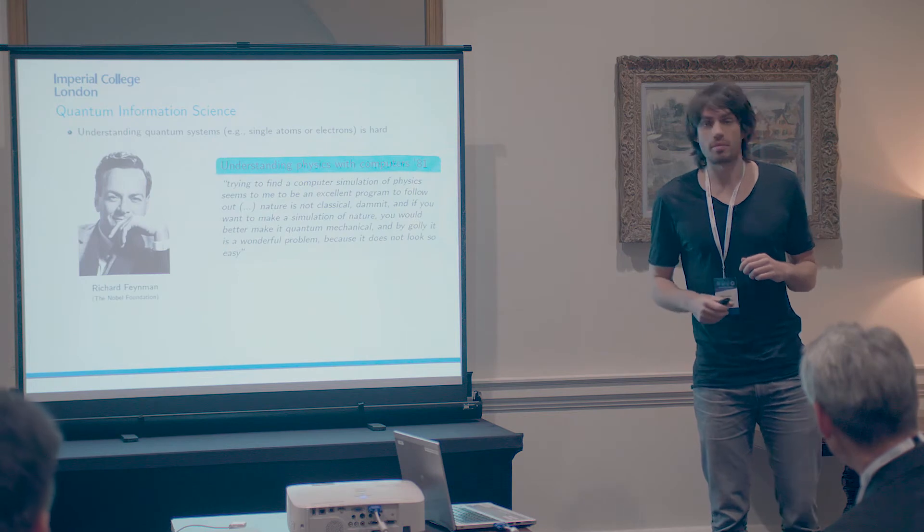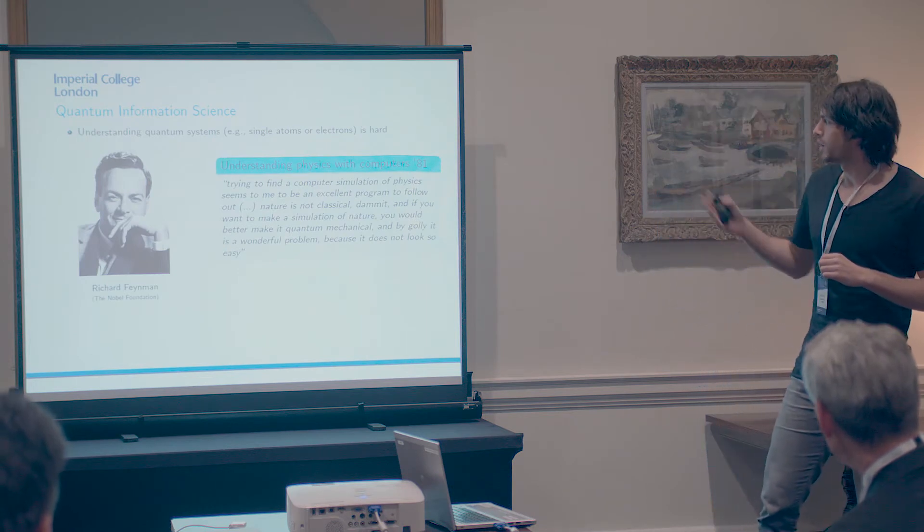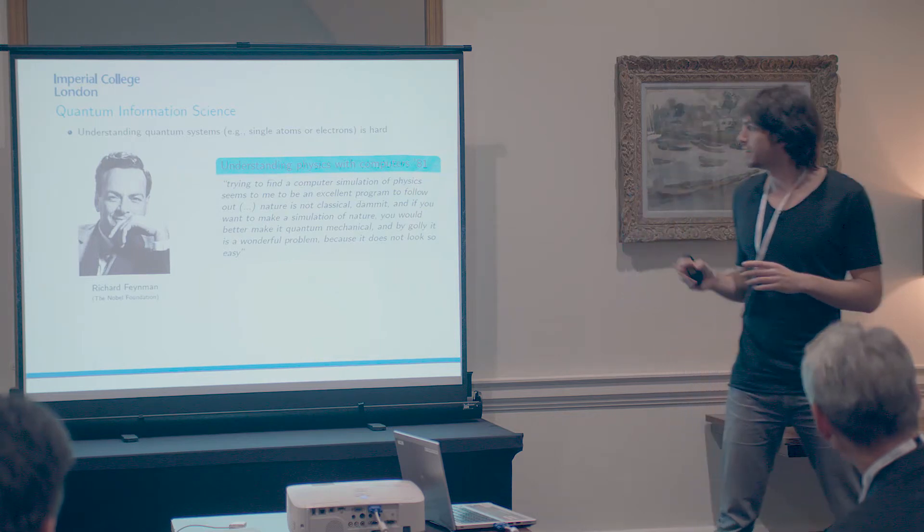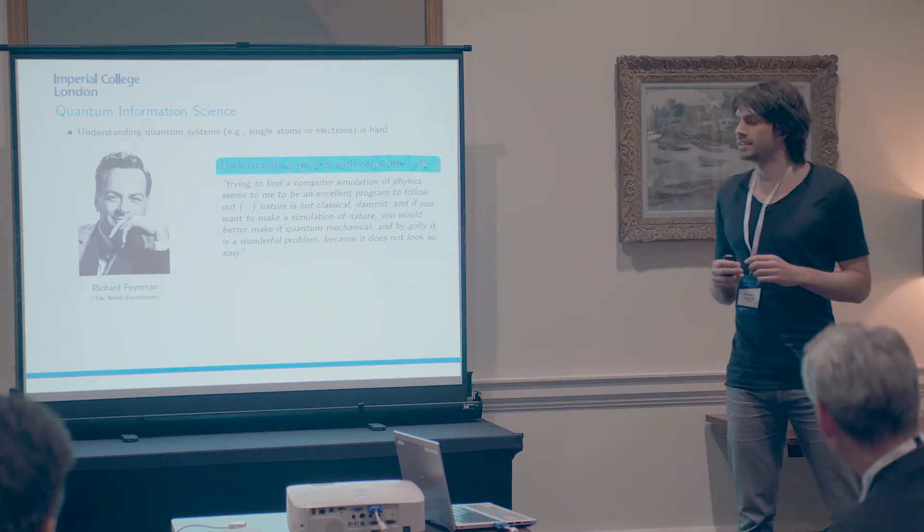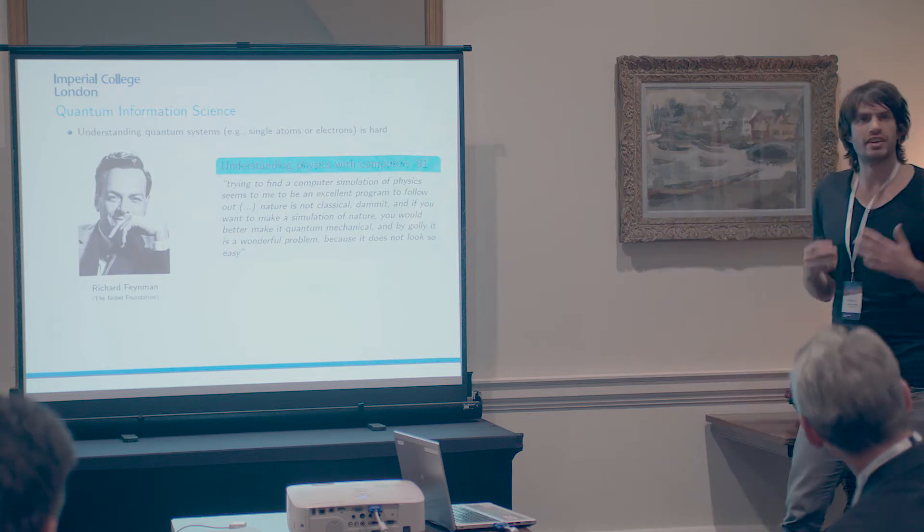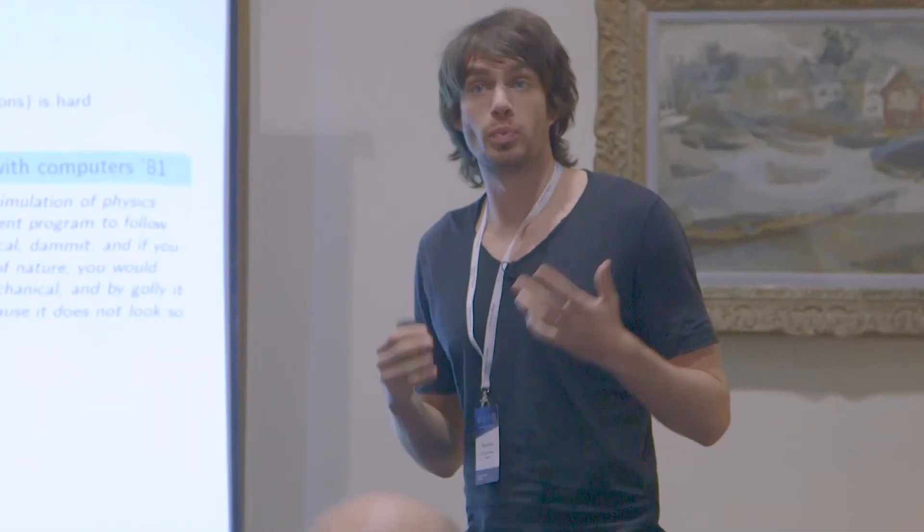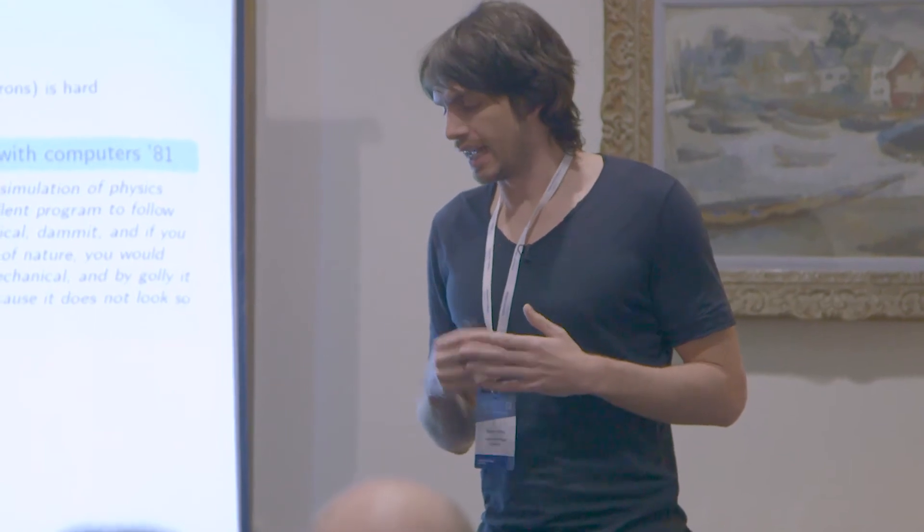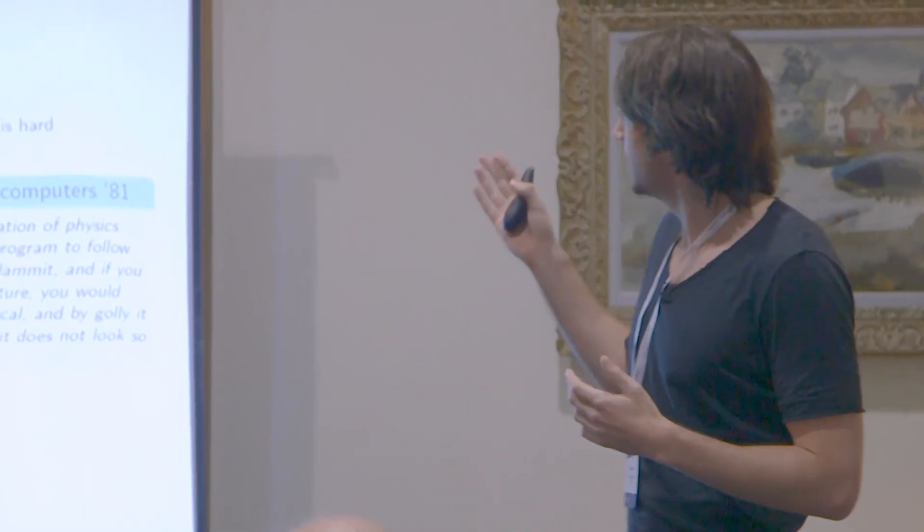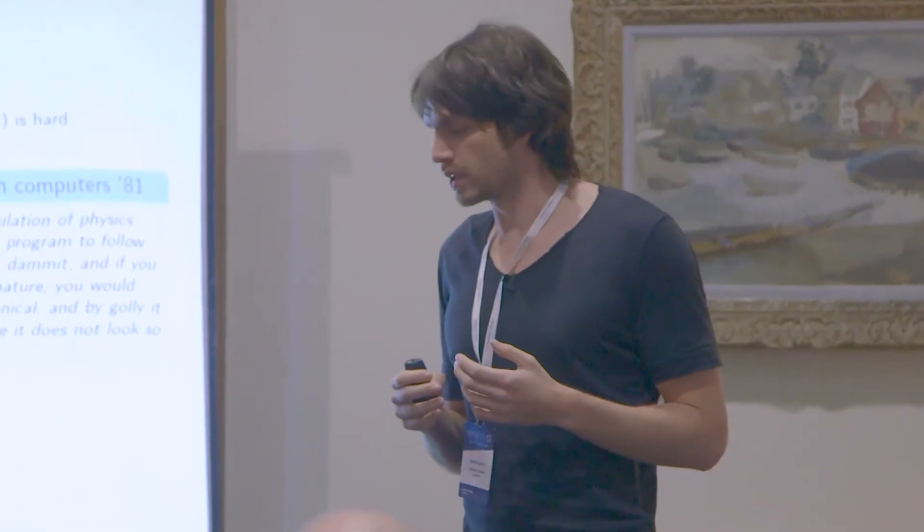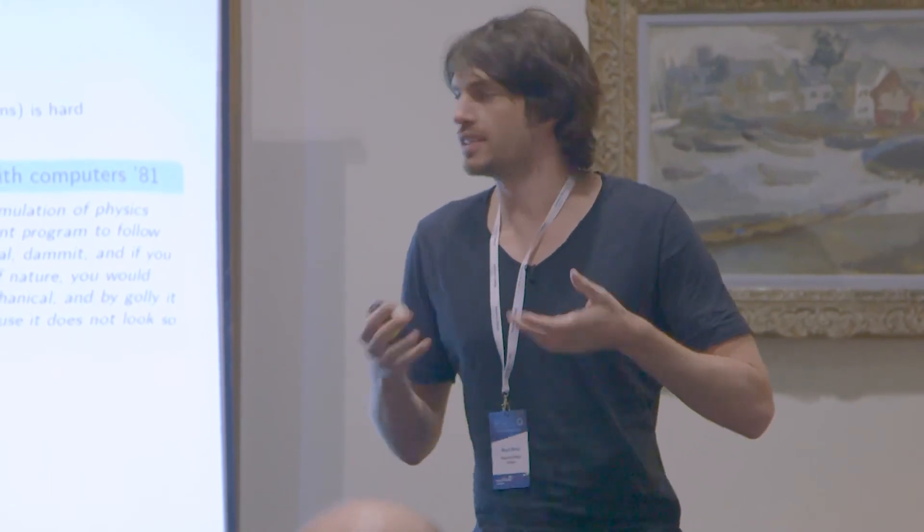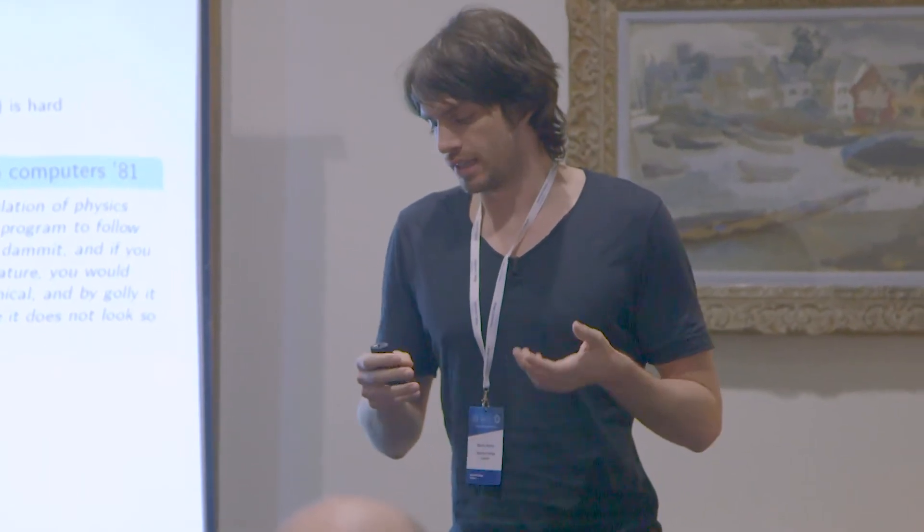And I would also like to start my presentation with Richard Feynman who was a famous theoretical physicist. He won the Nobel Prize in 1965. And I think it's fair to say that he was one of the first who really envisioned the potential of quantum technologies. And as we already heard, the point is if you start to look at smaller and smaller systems, in particular at single atoms or electrons, then it becomes hard to predict how these systems behave or the physical laws change.